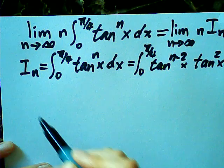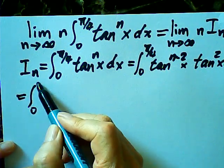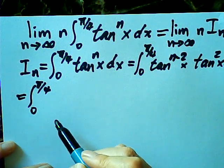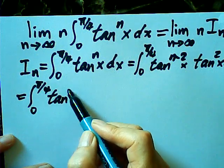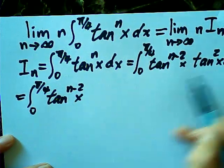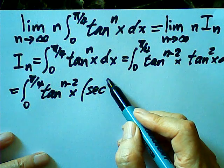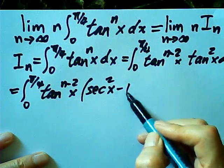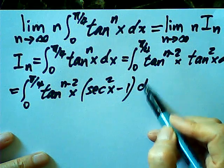Now this integral I can write as the integral from zero to quarter pi of tangent to the (n minus 2) times tangent squared x, dx. Then this equals the integral from zero to quarter pi of tangent^(n-2)(x) multiplied by secant squared x minus 1, dx.